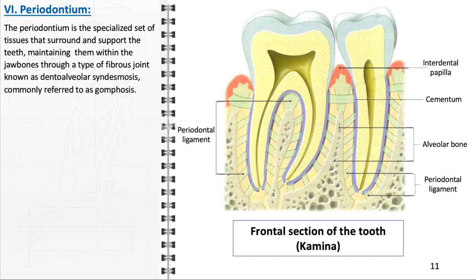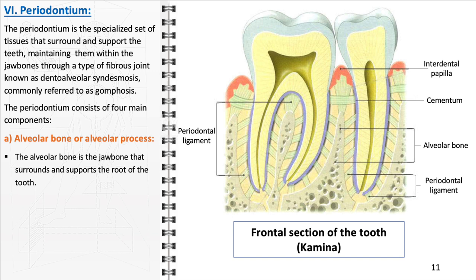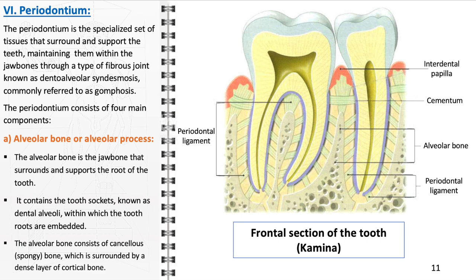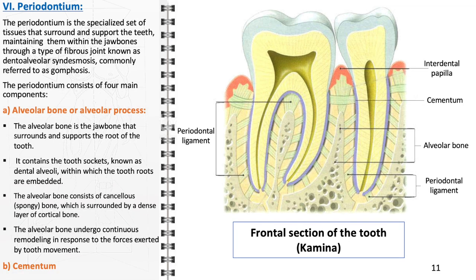The periodontium is the foundational structure supporting the teeth, comprising specialized tissues that surround and anchor them within the jaw bones through a fibrous joint known as dentoalveolar syndesmosis, commonly referred to as gomphosis. The periodontium consists of four main components. First, the alveolar bone, a part of the jaw bone, encases and supports the roots of the teeth in sockets known as dental alveoli. It features an inner cancellous spongy structure surrounded by a dense cortical bone layer and undergoes continuous remodeling in response to tooth movement forces. Cementum also plays a crucial role in attaching the tooth to the alveolar bone via the periodontal ligament.